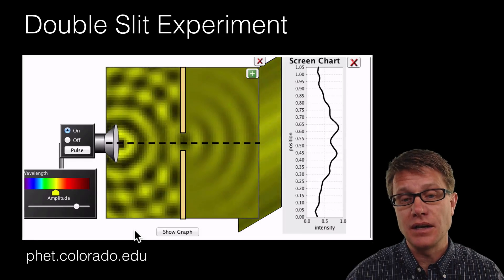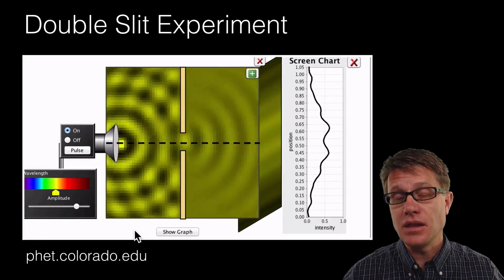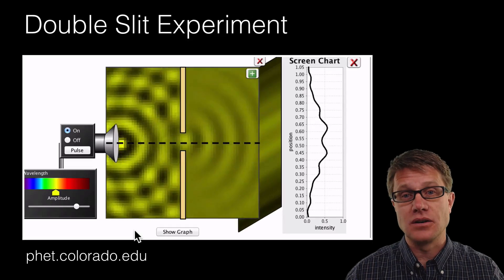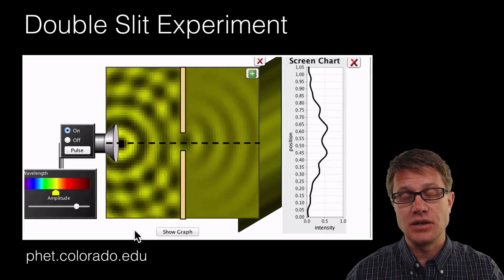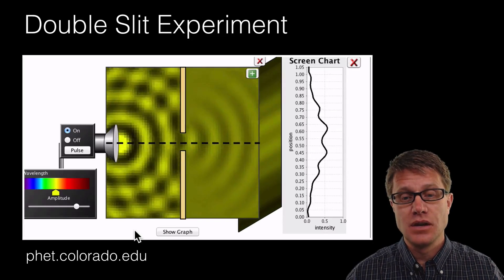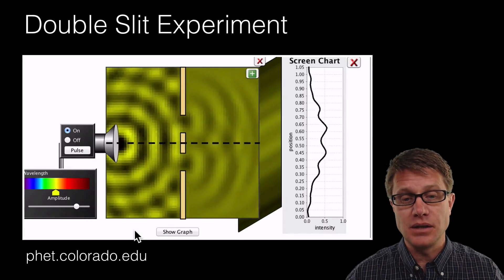Now if we add one slit what happens is, what you might think happens, is we have diffraction going on. And so near the center on that sheet in the back we are seeing really bright light. And then as we move out from that it is dropping off. Which makes sense. We are getting this mountain peak.